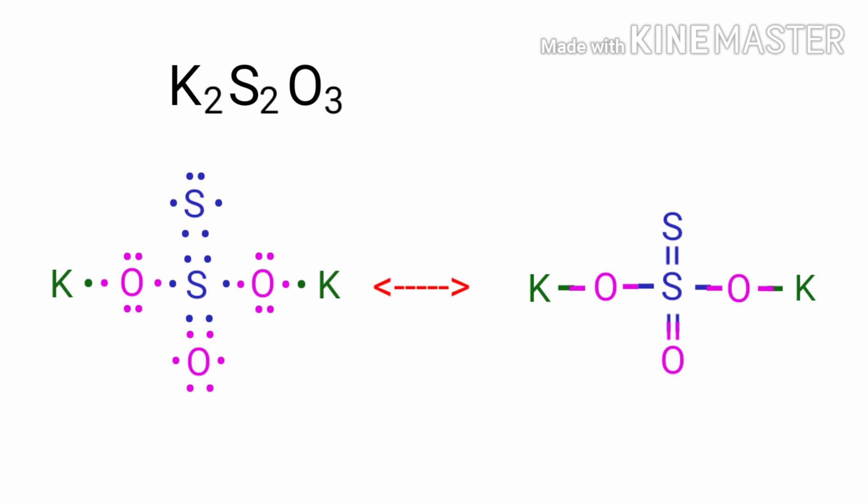As per the octet rule, sulphur needs 2 electrons and oxygen needs 2 electrons to get stability. So to get stability, the above sulphur atom can bond its 2 electrons with another sulphur atom. The 2 oxygen atoms can bond with potassium and sulphur atoms to get octet, and another oxygen atom bonds with the middle sulphur atom to get octet.